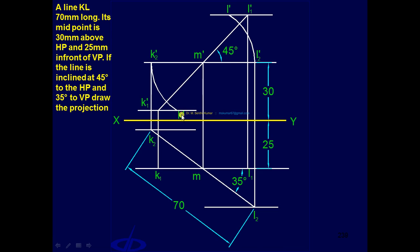Draw line joining K dash, L dash, that is nothing but the final front view. Similarly, here, M as center, M L1 as radius, draw arc. Similarly, this side.